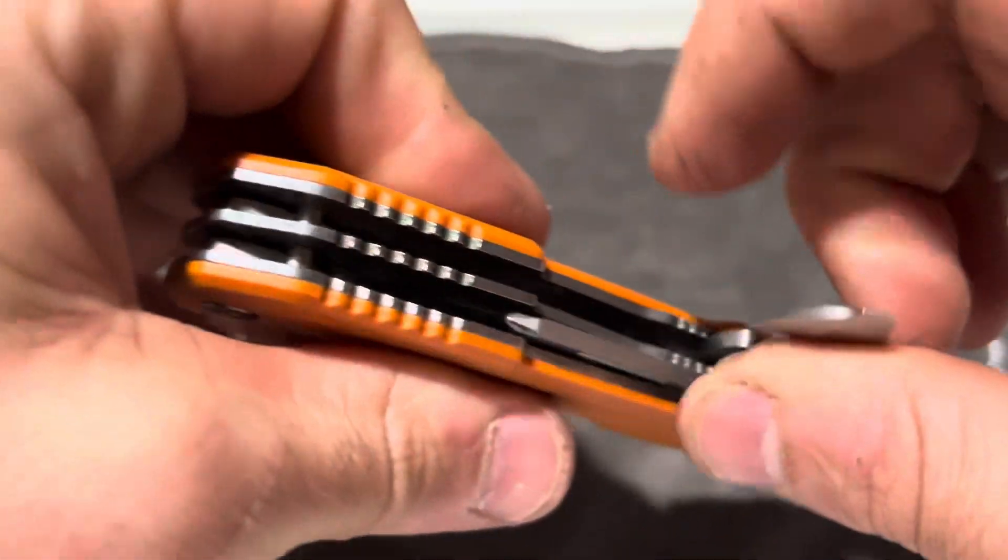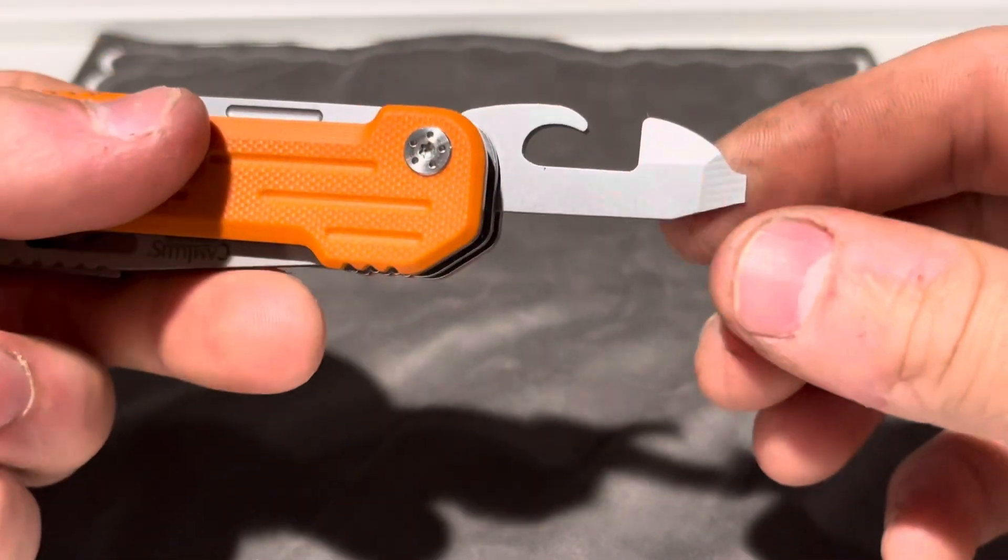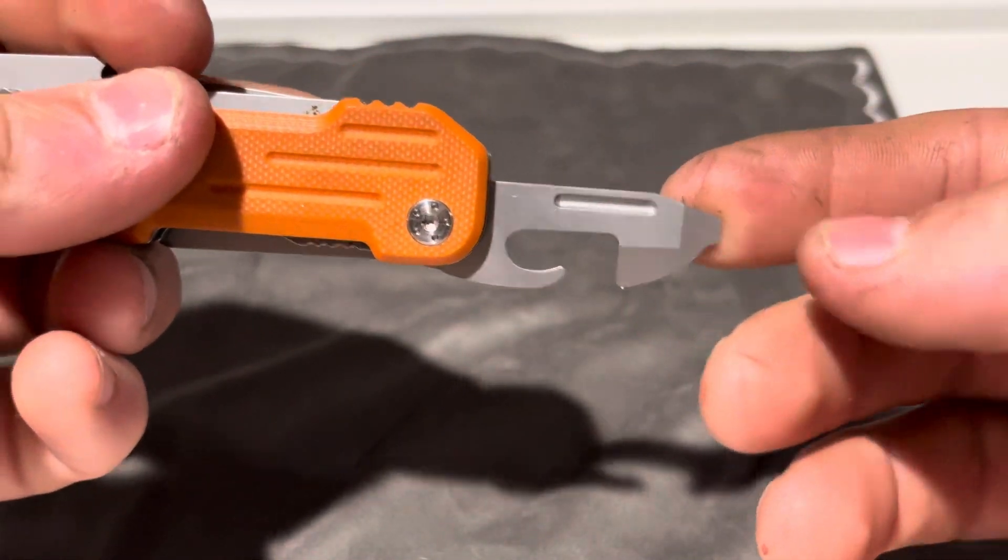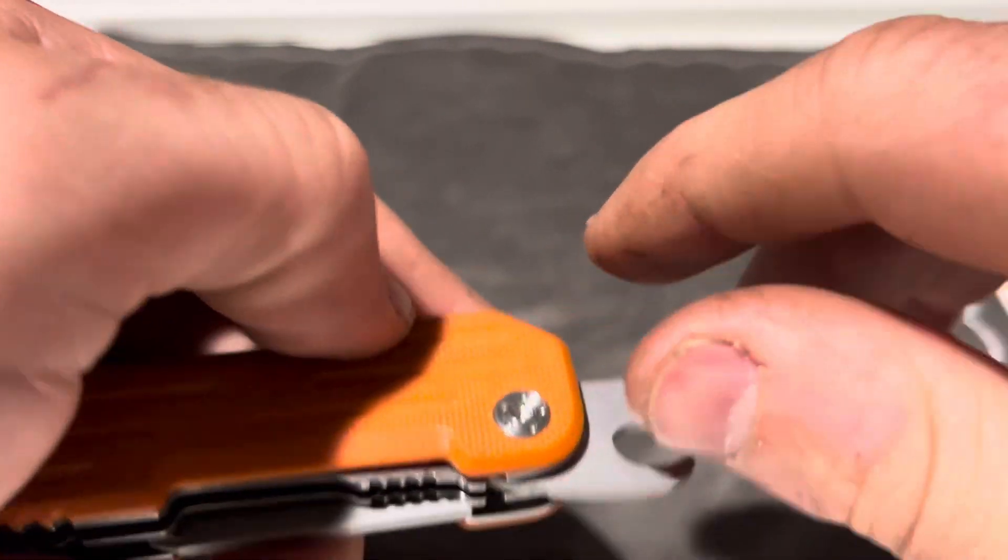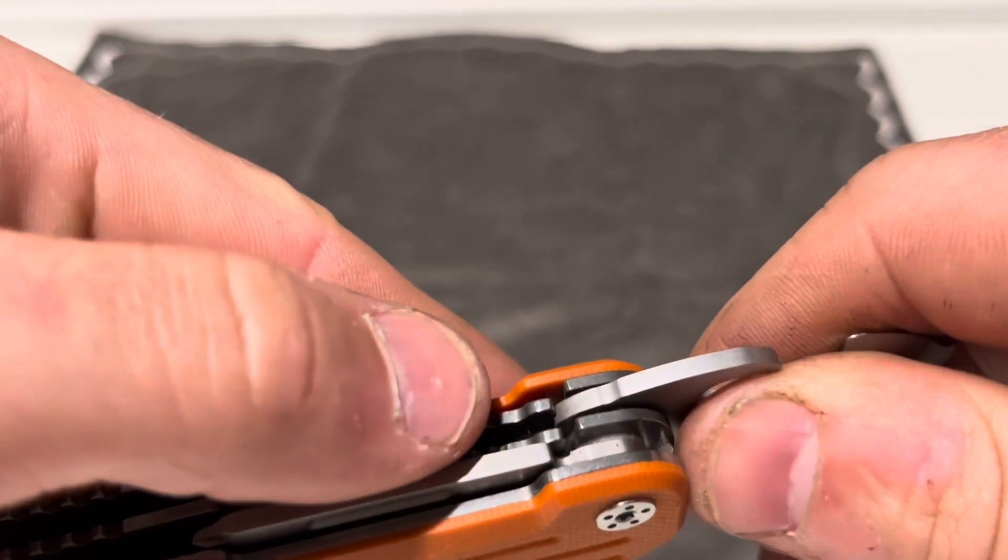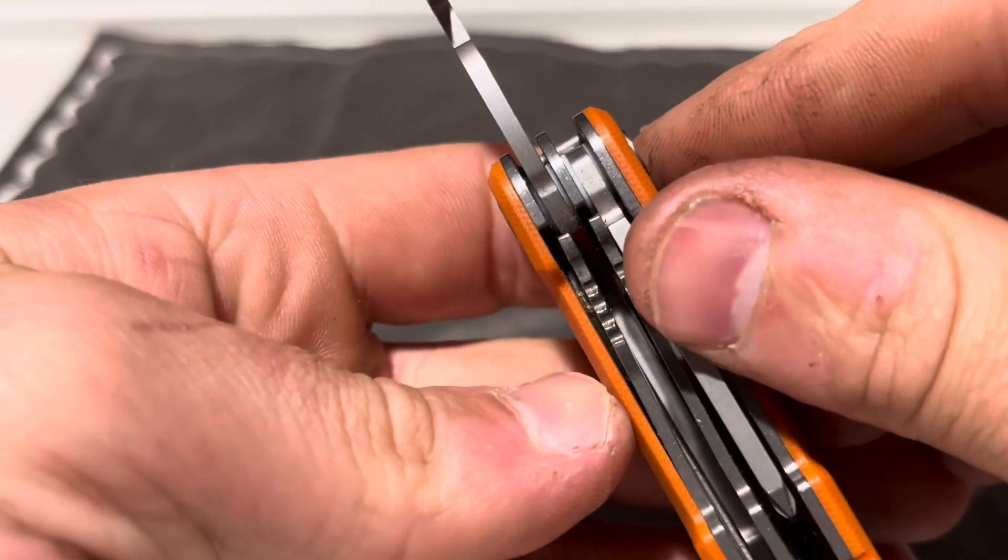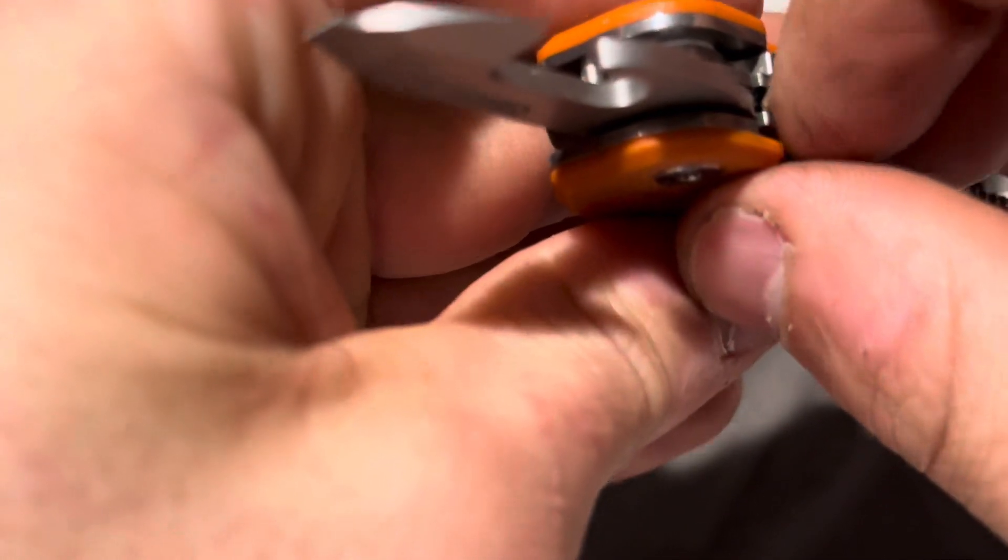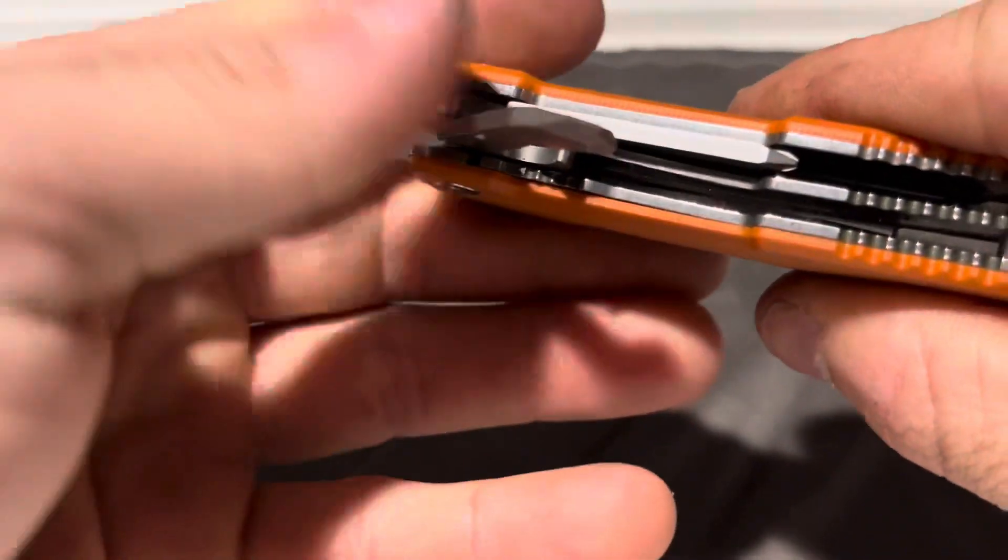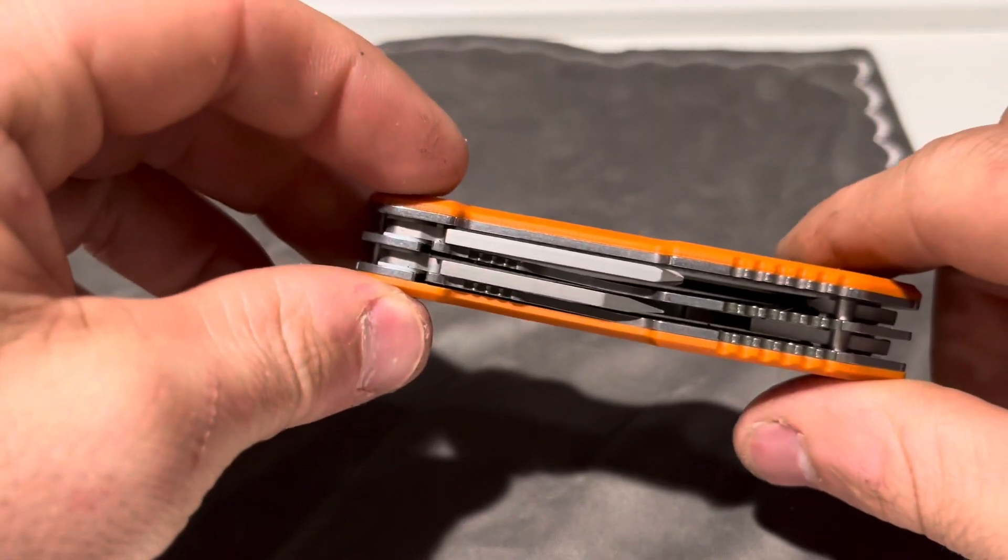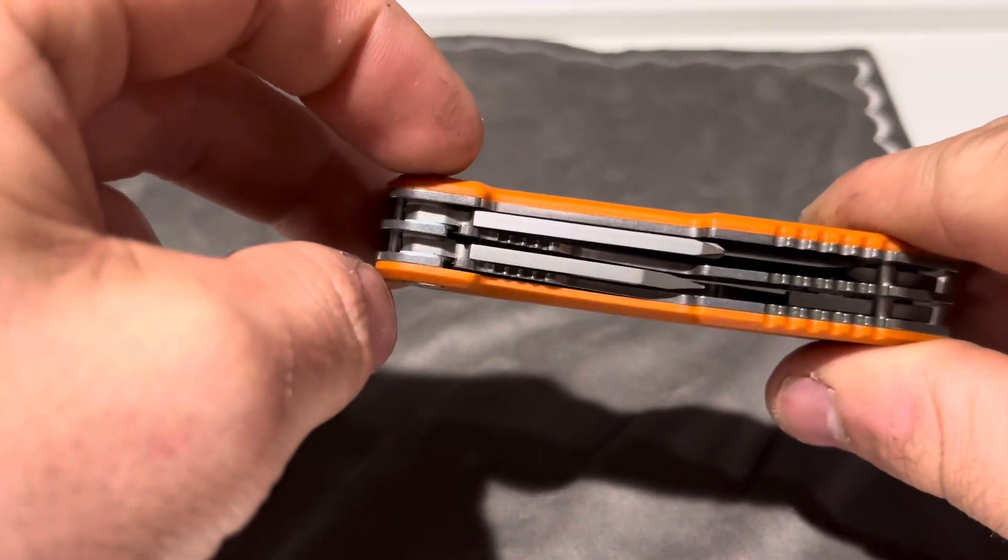Then on this side you get a can opener and flat head combo. They all have this nail nick thing here that you can get a real good grip on. The only thing I can say is sometimes getting in here to unlock the tools with the other tools there, it gets tight. If the liner locks went opposite ways, it would make it a lot easier to get in there.